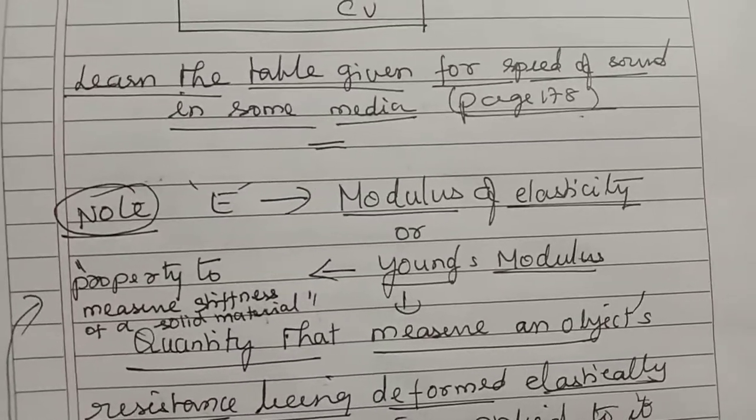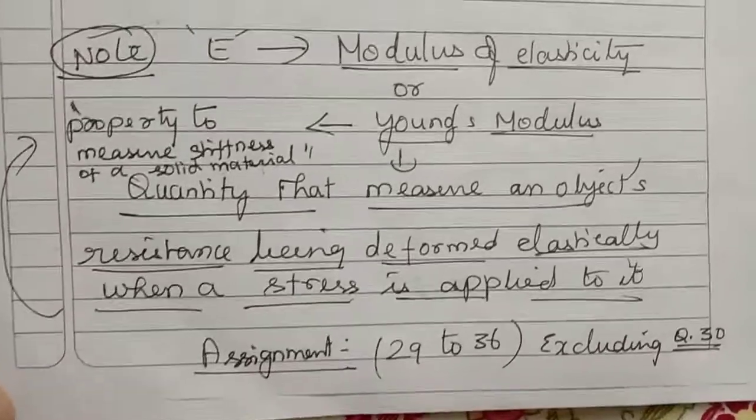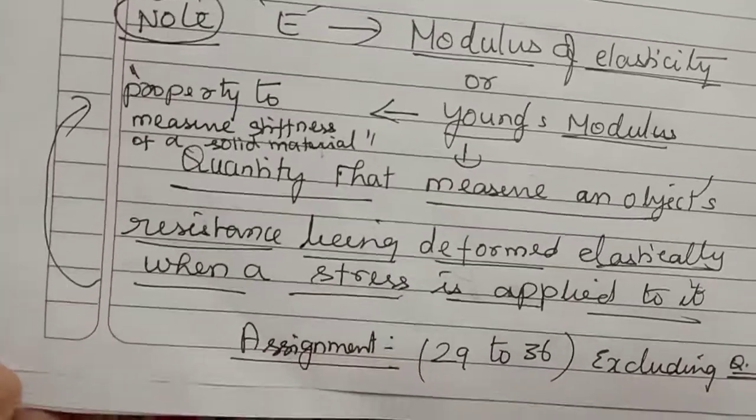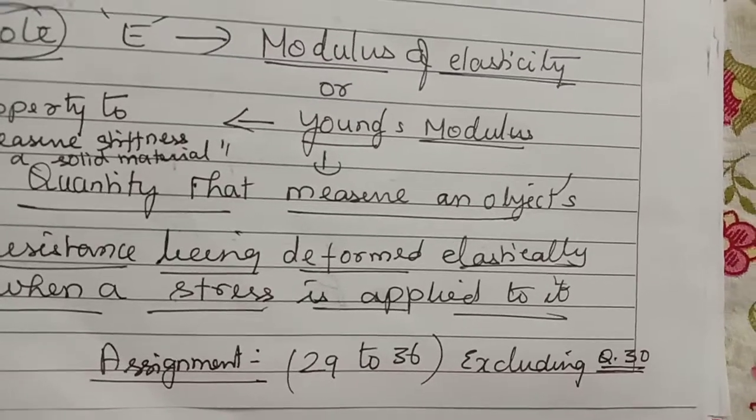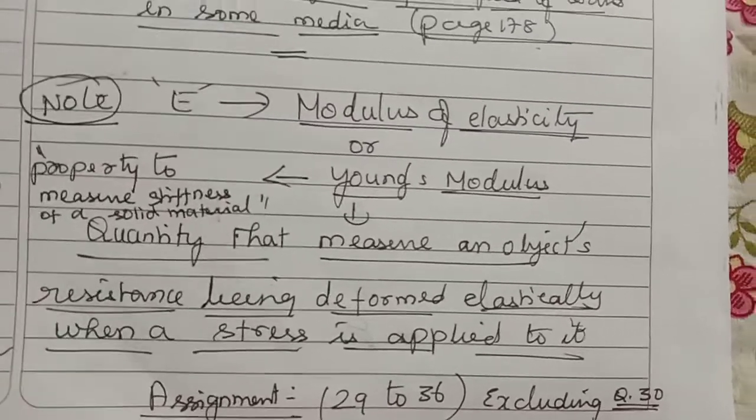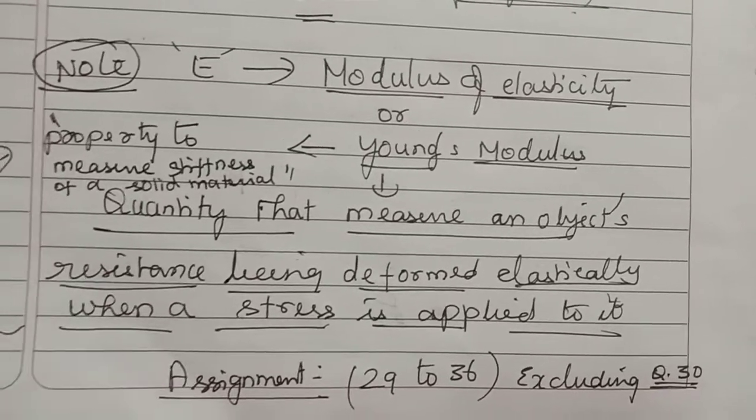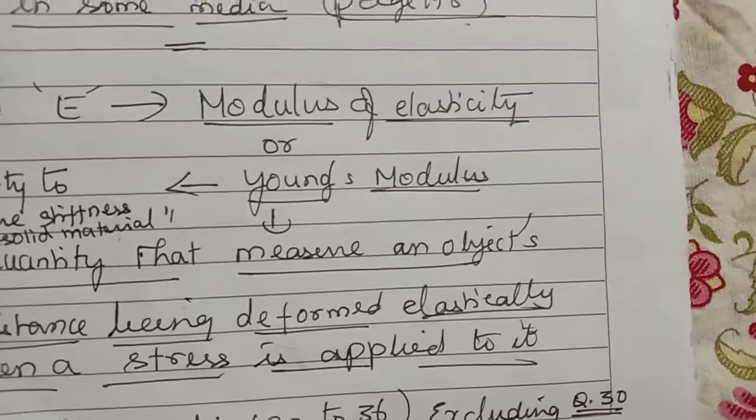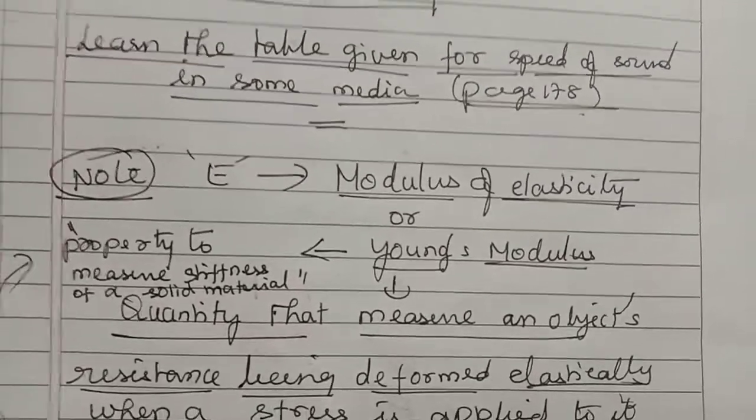We are coming to the end of this part three, children. We have an assignment today: you have to learn the questions from 29 to 36 clearly. If you have any doubts, we will clarify that later. Please exclude question number 30 because it's a numerical problem which I will deal with later. Thank you, children.